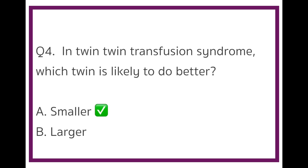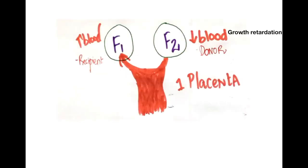The twin that is donating blood will have very less fluid and nutrition. This leads to growth retardation, anemia and oligohydramnios. On the other hand, the twin that is receiving a lot of blood will have polycythemia and polyhydramnios.